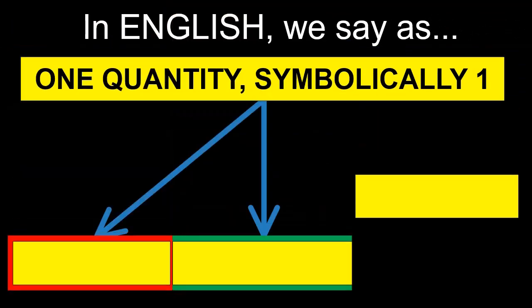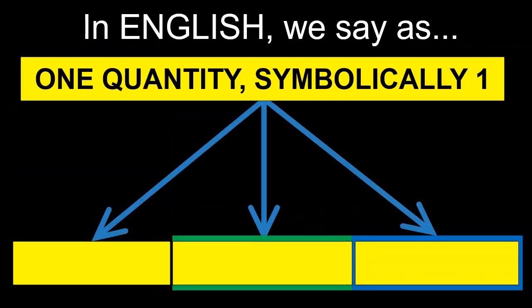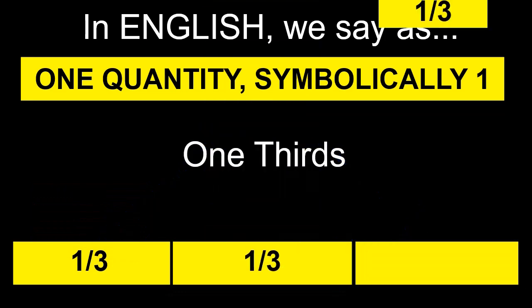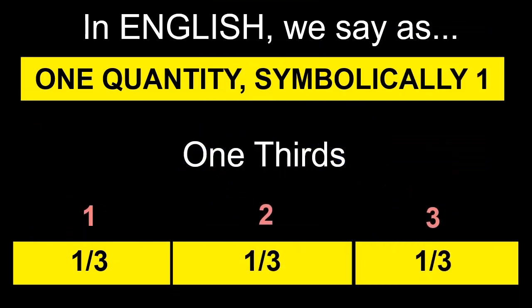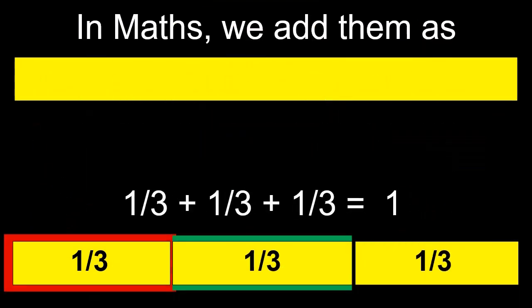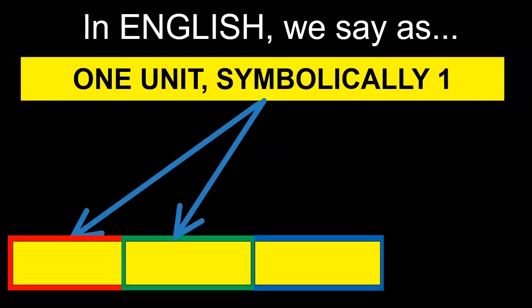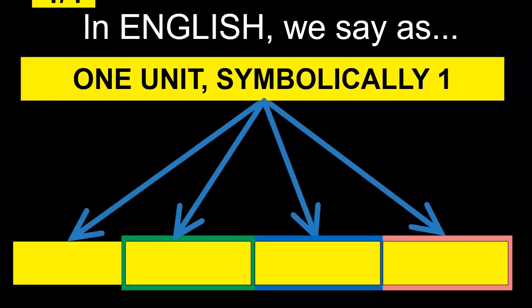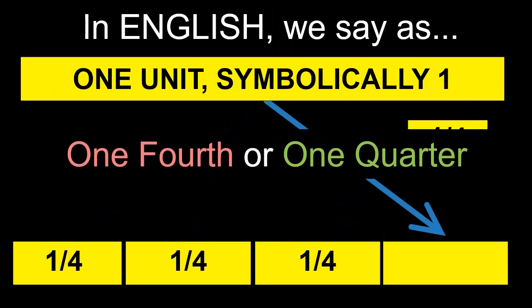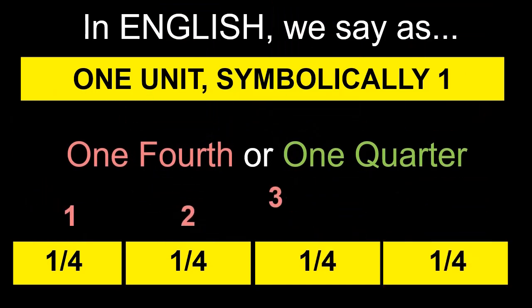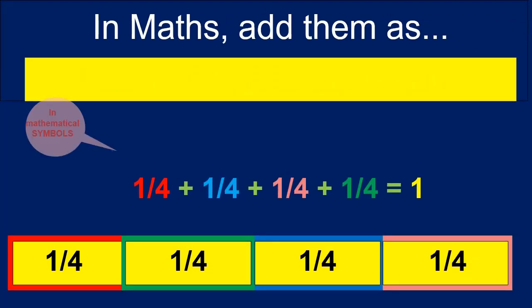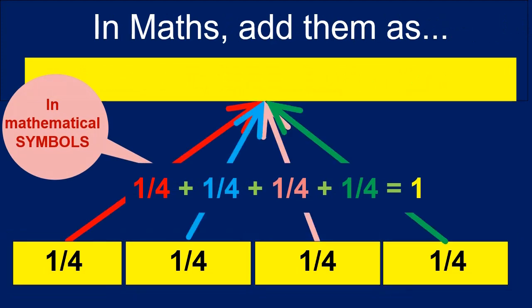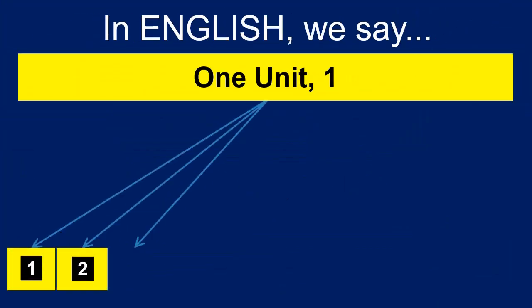Similarly, if one unit is divided into three equal units, then after division, each quantity is called as one third. There are three such one thirds which when added together results the same single quantity. If the same one unit is divided into four equal units, after division, each quantity is called as one fourth or one quarter. There are four such quarters which when added together results the same single quantity.